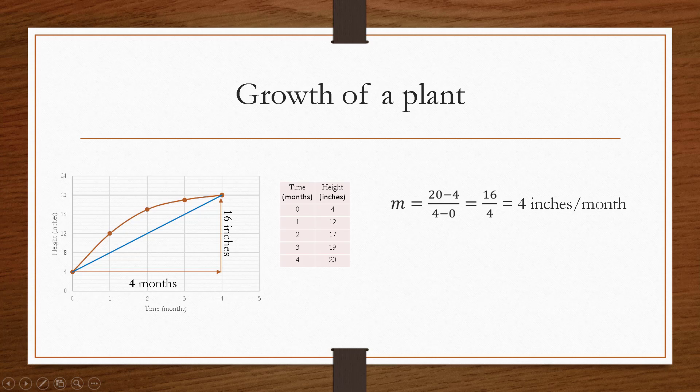Now that blue line has a special name. Any line connecting two points along a curve is called a secant line, and this is a very important concept because the slope of a secant line is always going to represent an average rate of change, or in our example, how much on average a plant grew each month.